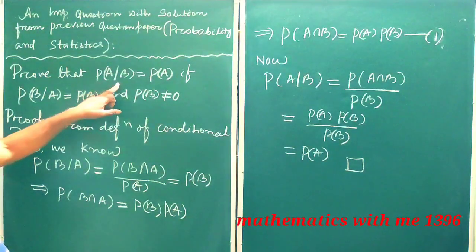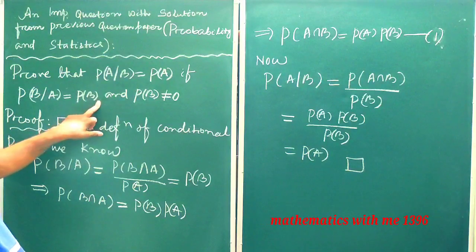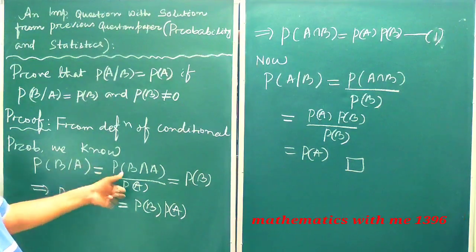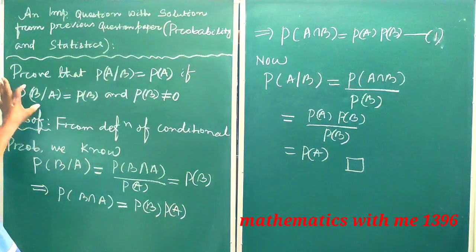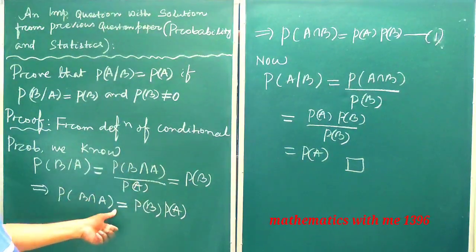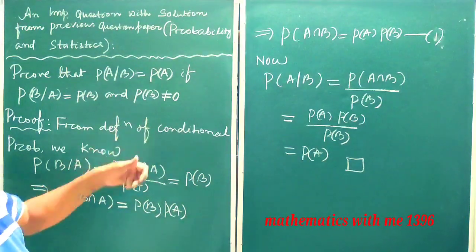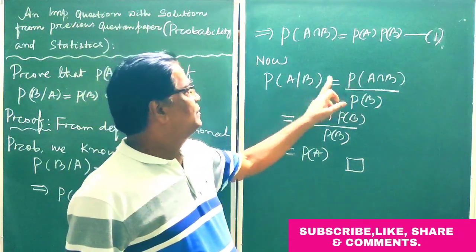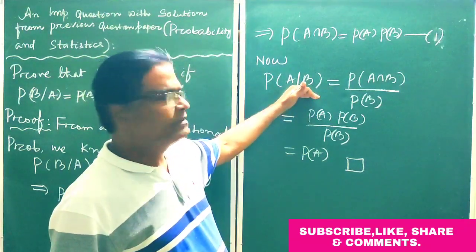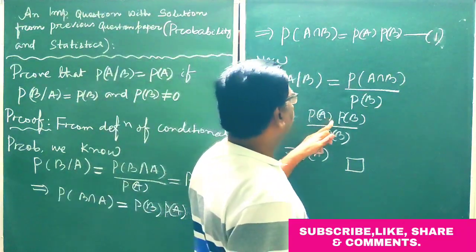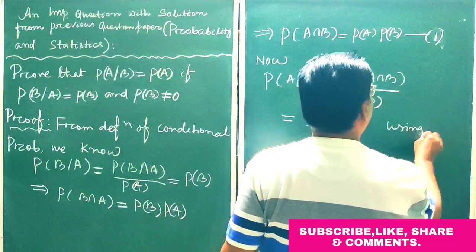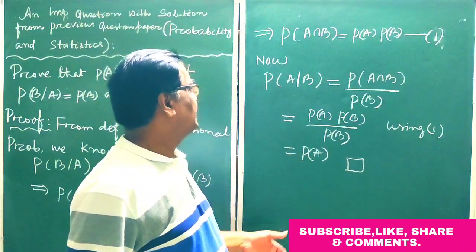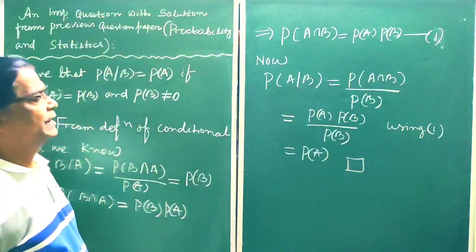So here we have to prove that P of A given B is equal to P of A, given P of B given A equals P of B and P of B is not equal to 0. From the definition, P of B given A equals P of B implies P of A intersection B equals P of B into P of A — that is equation 1. Now P of A given B equals P of A intersection B divided by P of B. Substituting equation 1, P of B cancels, and we get P of A. Therefore P of A given B equals P of A. Proved.